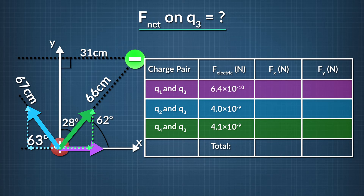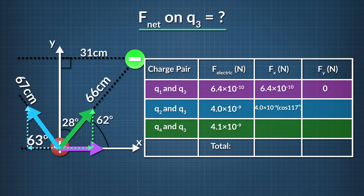Starting with the top row: since the cosine of zero degrees is one and the sine of zero degrees is zero, the x component of the force of q1 on q3 is 6.4 times 10 to the negative tenth, and the y component is zero. For the x component of the force from q2 on q3, 4.0 times 10 to the negative ninth times cosine of 117 degrees equals negative 1.8 times 10 to the negative ninth newtons.